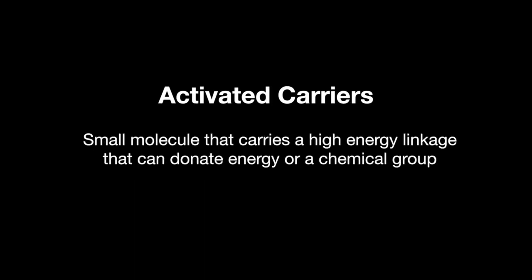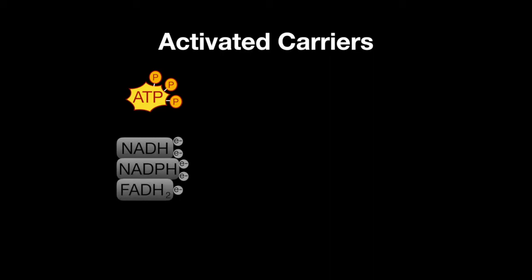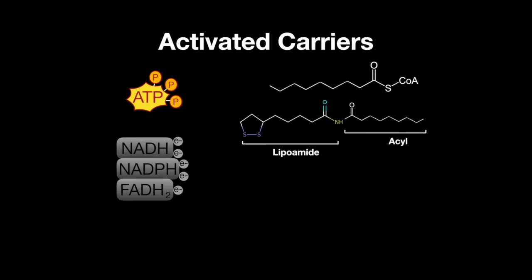An activated carrier is a small molecule that carries a high energy linkage that can donate energy or a chemical group. The activated carriers are ATP, which carries energy in the form of phosphoryl groups; NADH, NADPH, and FADH2, which all carry electrons; and coenzyme A and lipoamide, which carry acyl groups.